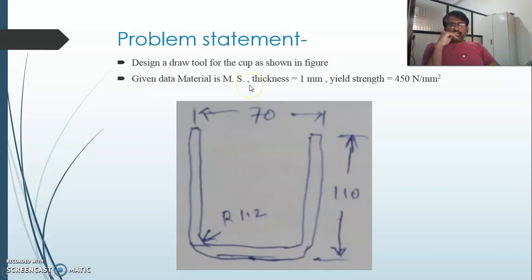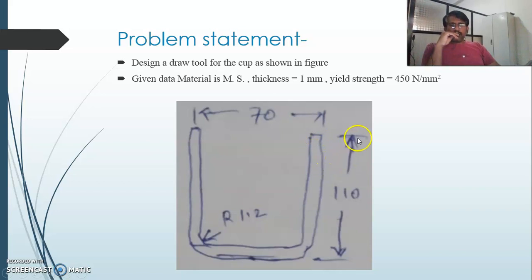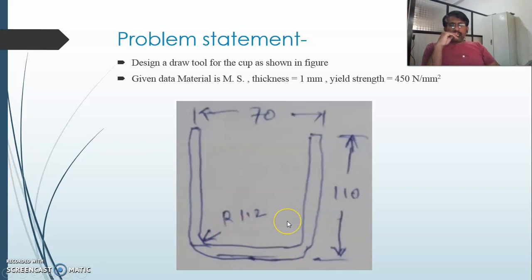The given data is: the material is MS, thickness 1 mm, and the yield strength is 450 Newton per mm square. The shape required to draw from the sheet metal has a height of 110 mm, shell diameter of 70 mm, and the radius for the curve is required to be 1.2 mm.